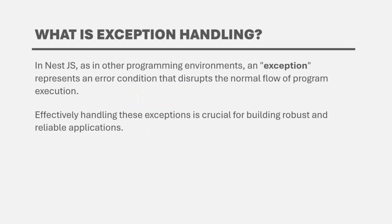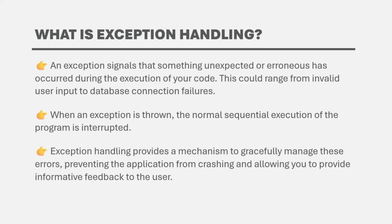In NestJS, as in other programming environments, an exception represents an error condition that disrupts the normal flow of program execution. Effectively handling these exceptions is crucial for building robust and reliable applications. An exception signals that something unexpected or erroneous has occurred during the execution of your code. Remember that exception does not mean only errors — it also means unexpected results. An exception can range from invalid user input to database connection failures.